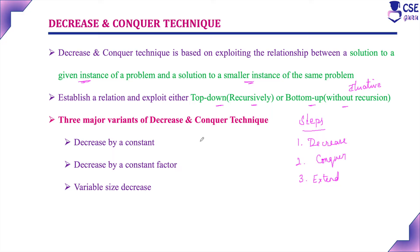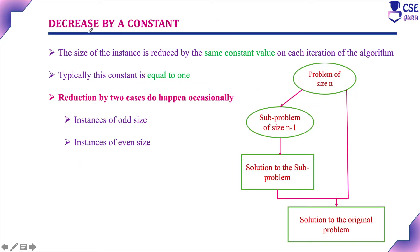There are three variants of decrease and conquer: decrease by constant value, decrease by constant factor, and variable size decrease. The first variant is decrease by a constant. Here the size of the instance is reduced by the same constant value in each iteration of the algorithm. That constant value is usually equal to one. Two special cases can occur: an instance of odd size (1, 3, ...) or an instance of even size (2, 4, ...).